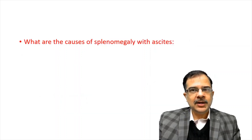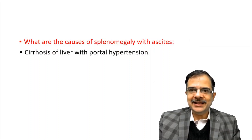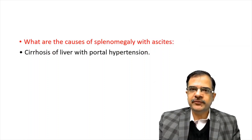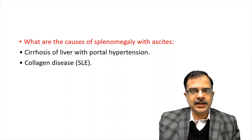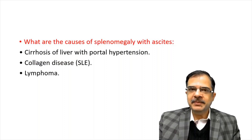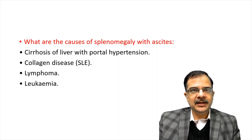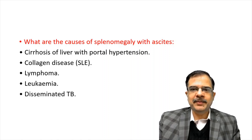What are the causes of splenomegaly with ascites? The first answer will be cirrhosis with portal hypertension. It can also be seen in SLE where ascites is present, in lymphomas and leukemia, and of course disseminated tuberculosis.